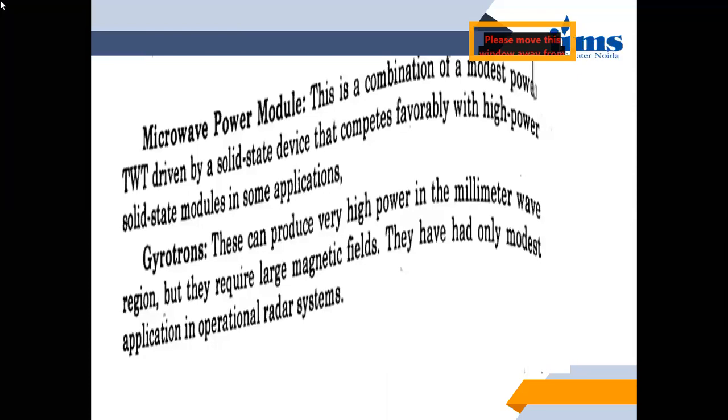there are two more devices which are used to generate RF power signals or RF signals in the radar system. These are Microwave Power Module and Gyrotrons.